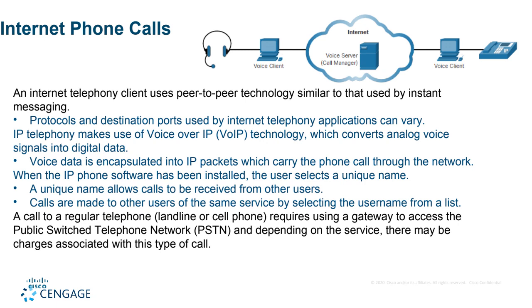There are also internet phone calls, called internet telephony. It uses peer-to-peer technology; protocols and destination ports used by internet telephony applications can vary. IP telephony makes use of VoIP technology, which converts analog voice into digital data and sends it on the IP network. The voice is encapsulated into IP packets which carry the phone calls through the network. When IP phone software is installed, the user selects a unique name, which allows calls to be received from other users. Calls are made by selecting a username from a list.